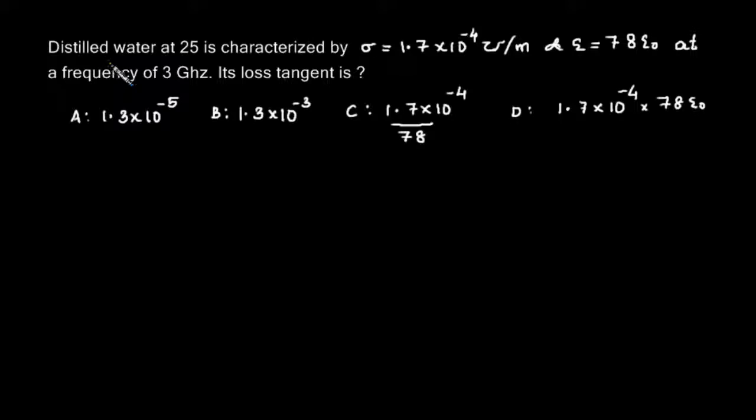This was GATE in 2002. The distilled water at 25 degrees Celsius is characterized by sigma is 1.7 into 10 power minus 4 mho per meter and epsilon is 7.78 epsilon not at a frequency of 3 gigahertz. We are asked what is the loss tangent.